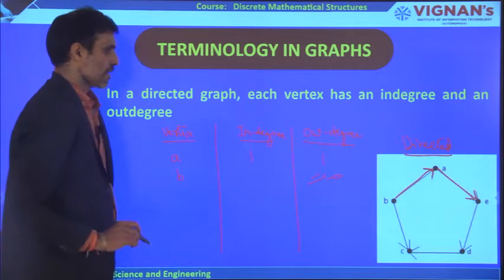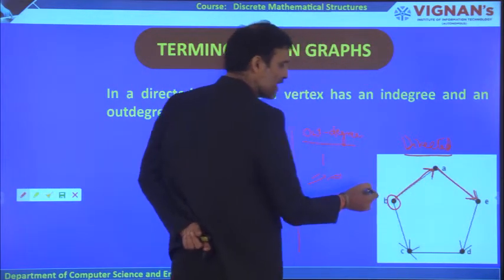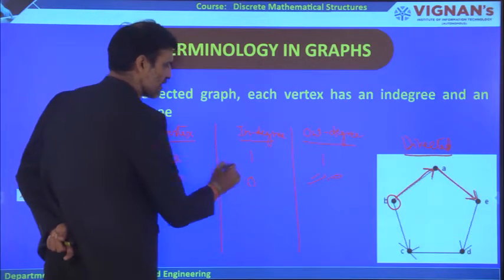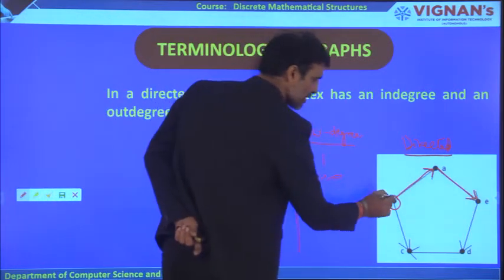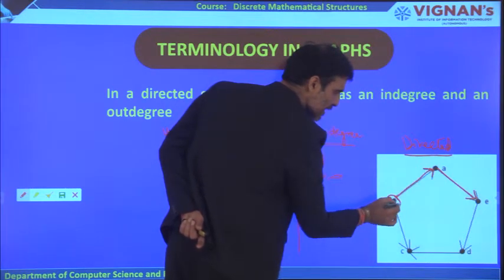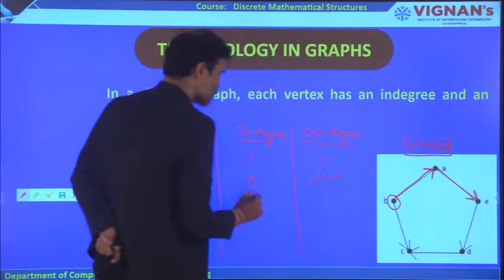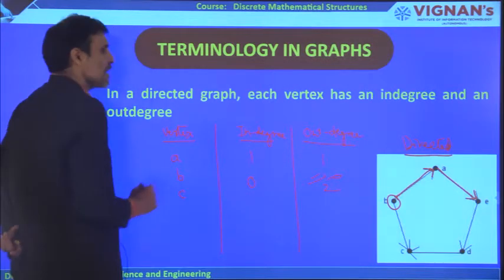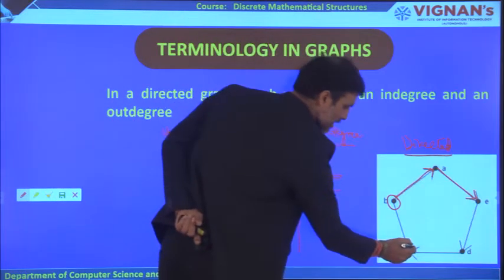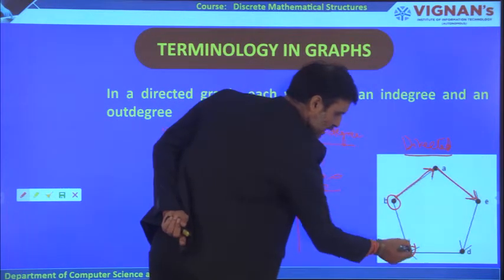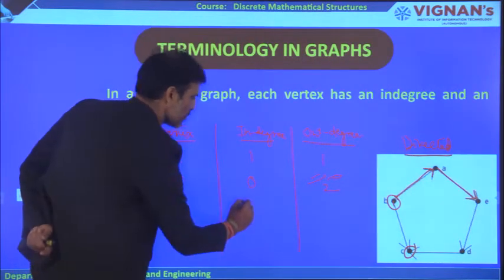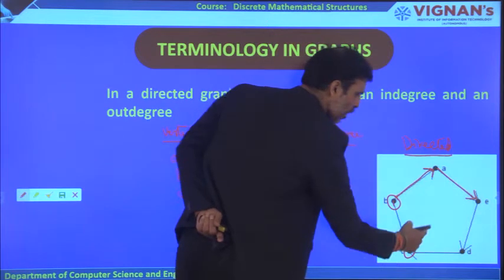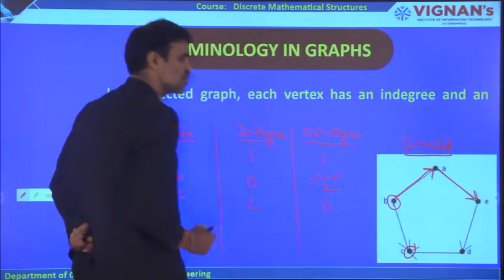For vertex C: two edges are coming towards C, so in-degree is 2; no edge is going out, so out-degree is 0. For vertex D: one edge is coming towards D, so in-degree is 1; one edge is going out, so out-degree is 1.